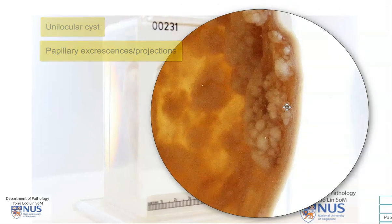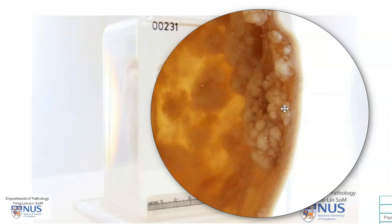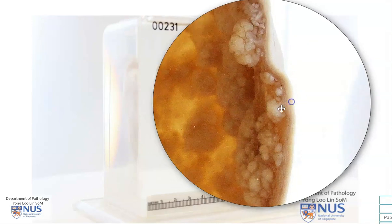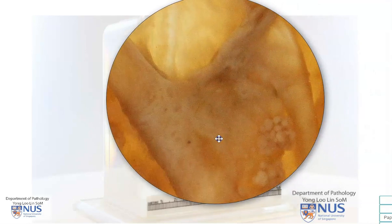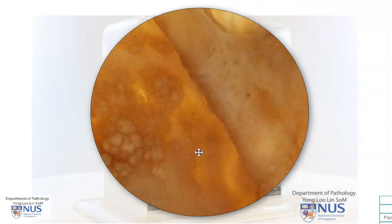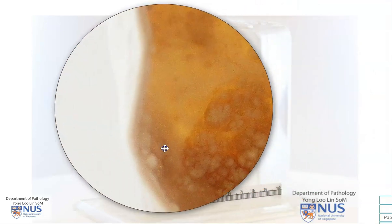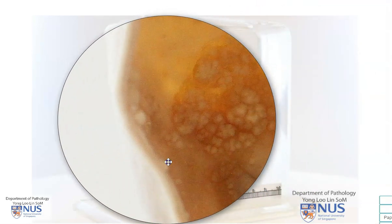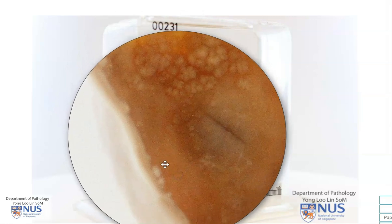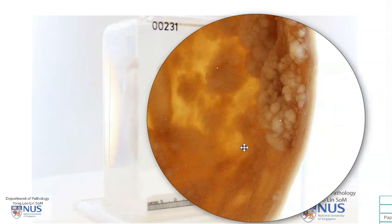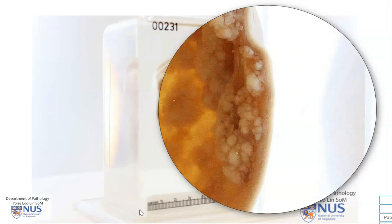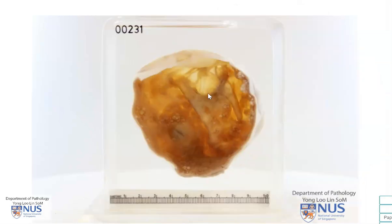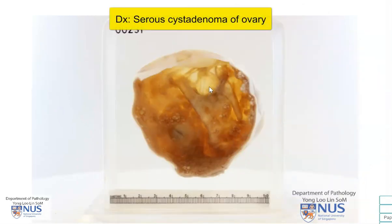And here again we see them. We don't see any large solid fleshy areas, but most of these projections are rather small, and they also don't appear to be invading into the wall of the ovary. This is an example of a serous cyst adenoma of the ovary.